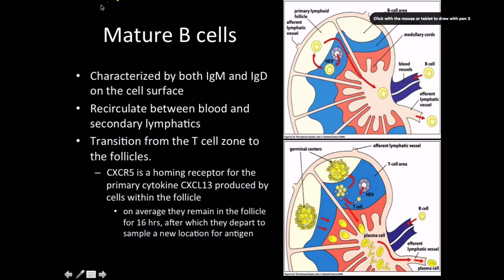Mature B-cells are characterized by both IgM and IgD on the cell surface. They recirculate between blood and secondary lymphatics like the lymphatic system does. They transition from the T-cell zone to the follicles. This is the HEV there. As we're going out, we're present in the primary lymphoid follicles - here's the B-cell area. But if we have to leave, we travel and pass through the T-cell area. As it's doing this, it encounters T-cells, which are really good at activating B-cells.